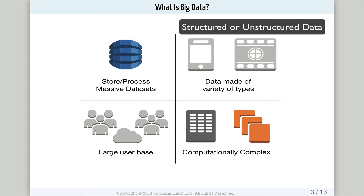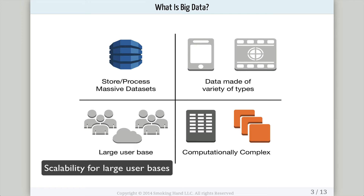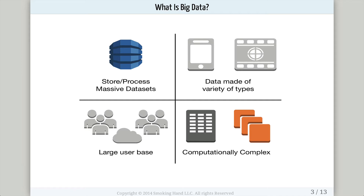Another manifestation is the type of data. Does it contain structured or unstructured data? Does it have a variety of types such as images, tweets, blog articles, as well as video? A third manifestation is a large user base where the user base could occupy the entire internet and the product requires a great deal of scalability. The final manifestation involves things that are computationally complex, like recommendation engines, which require a vast amount of computation in order to give a result.